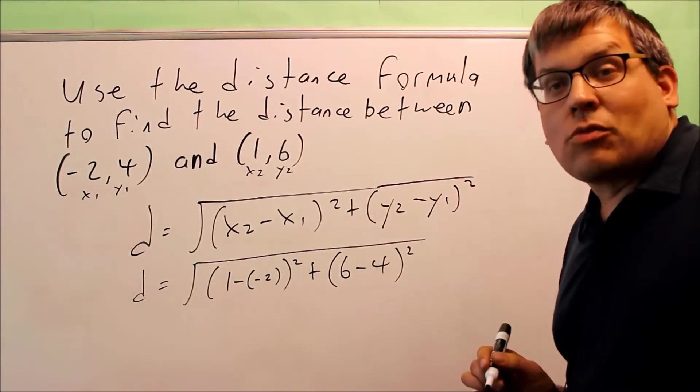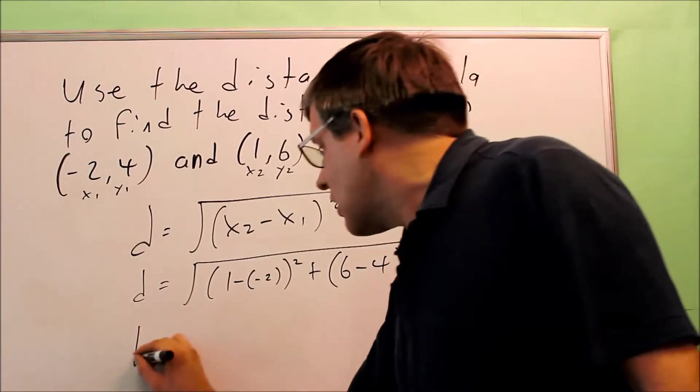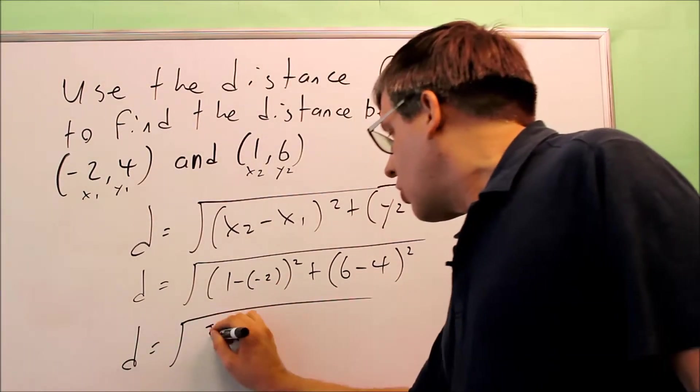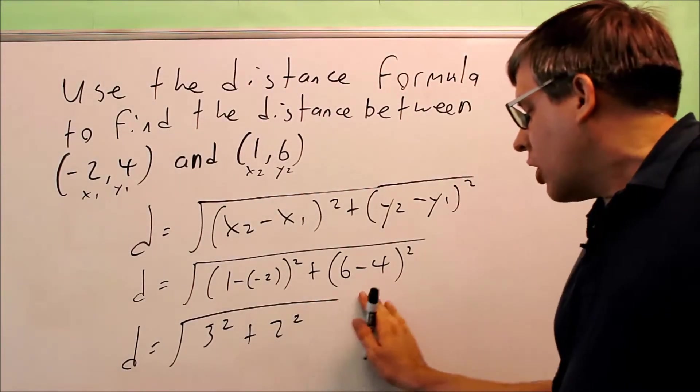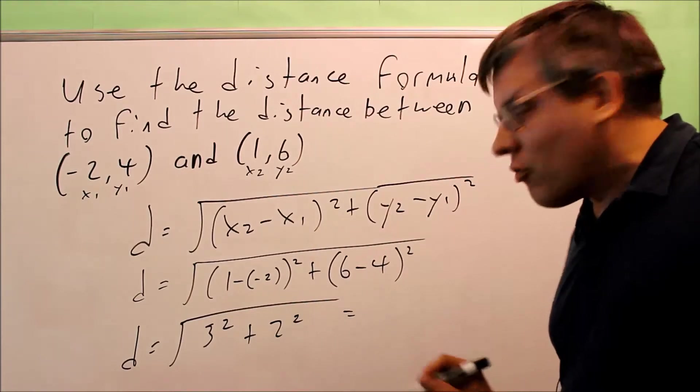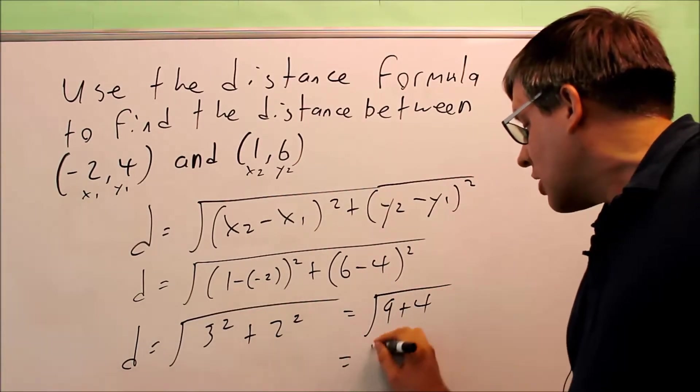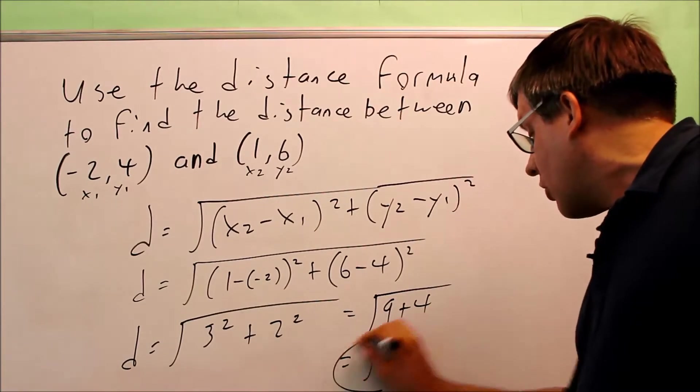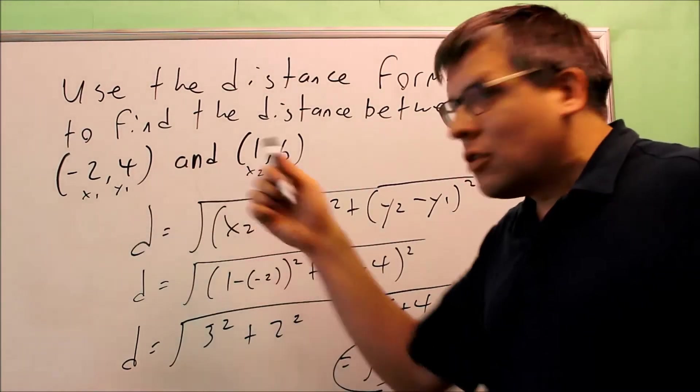Now we're just ready to simplify it and get the answer. Double negative means that's going to be a 3 inside there. So I have 3 squared plus 2 squared. And then when I simplify that further, I get 9 plus 4. That's going to be equal to the square root of 13. So the square root of 13 is going to be the distance between these two points.